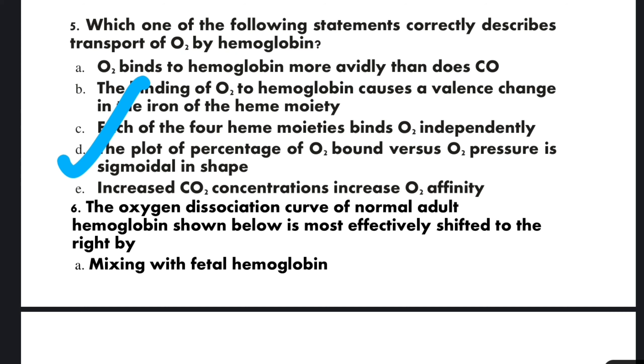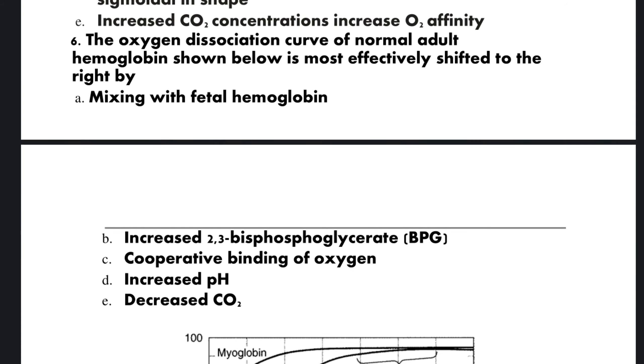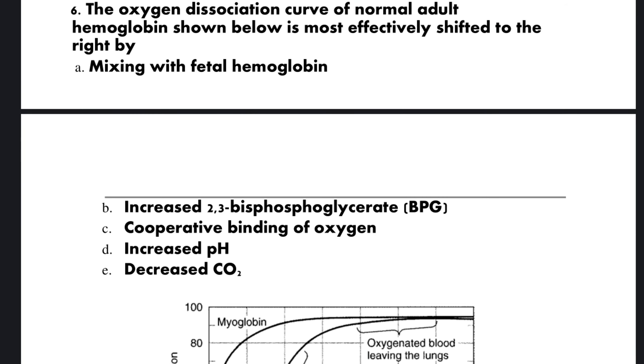The correct option is D: the plot of percentage of O2 bound versus O2 pressure is sigmoid in shape.